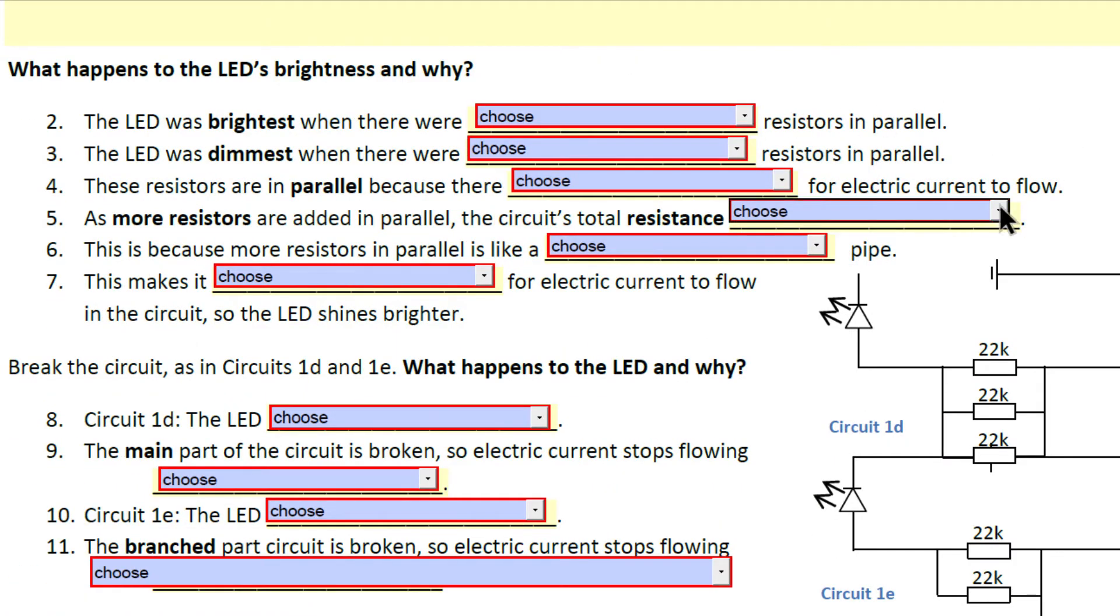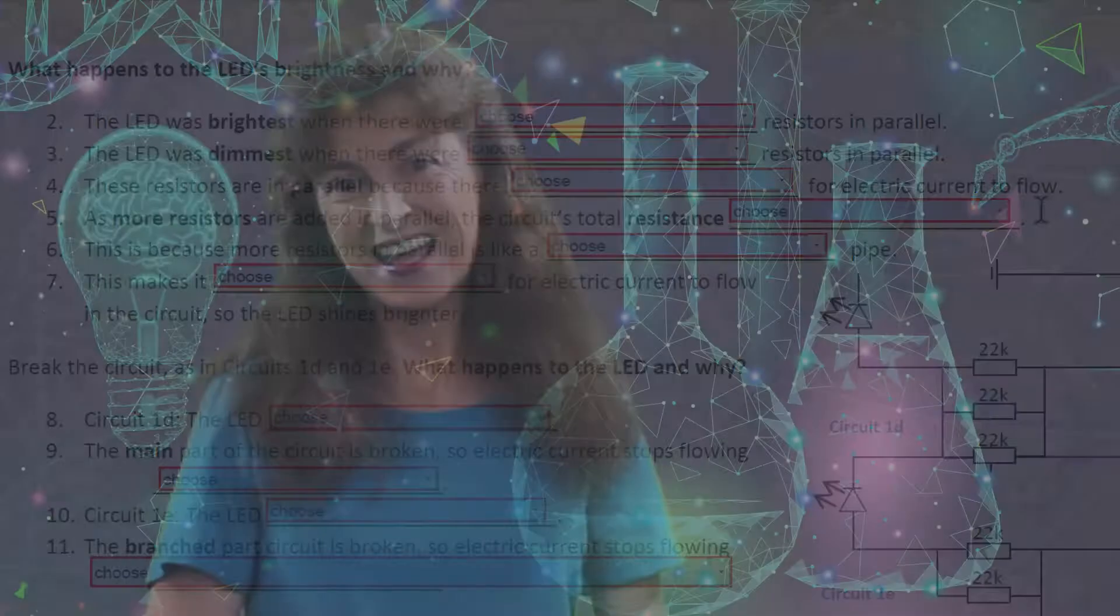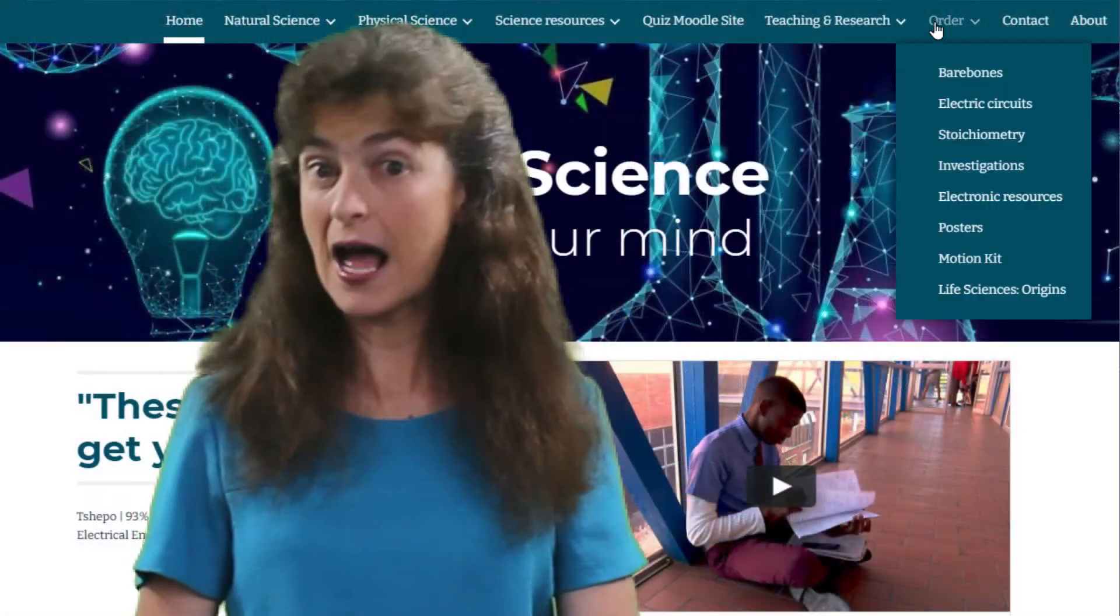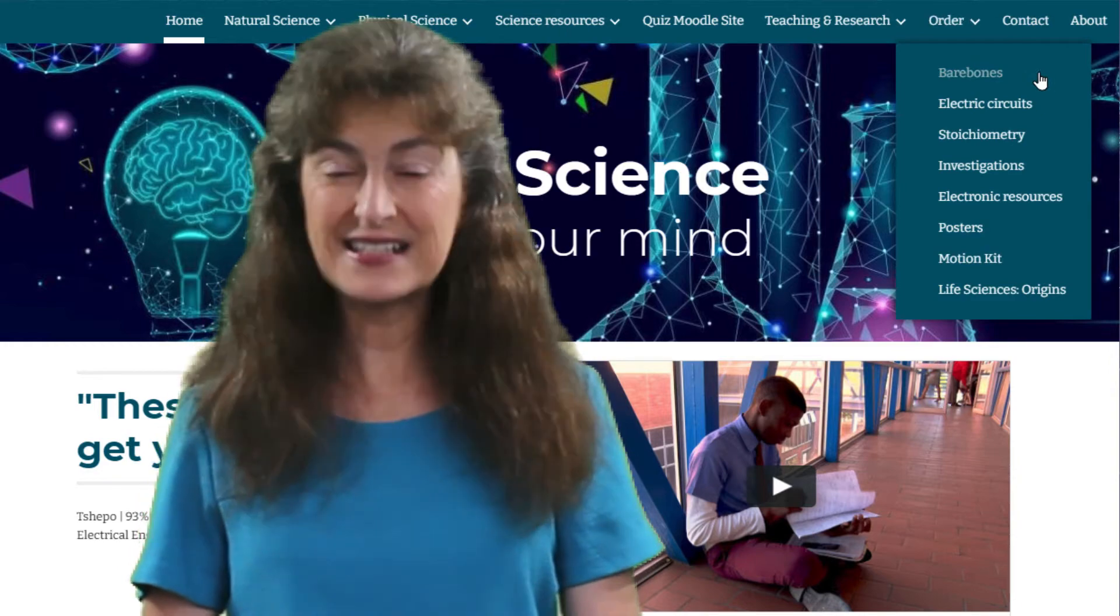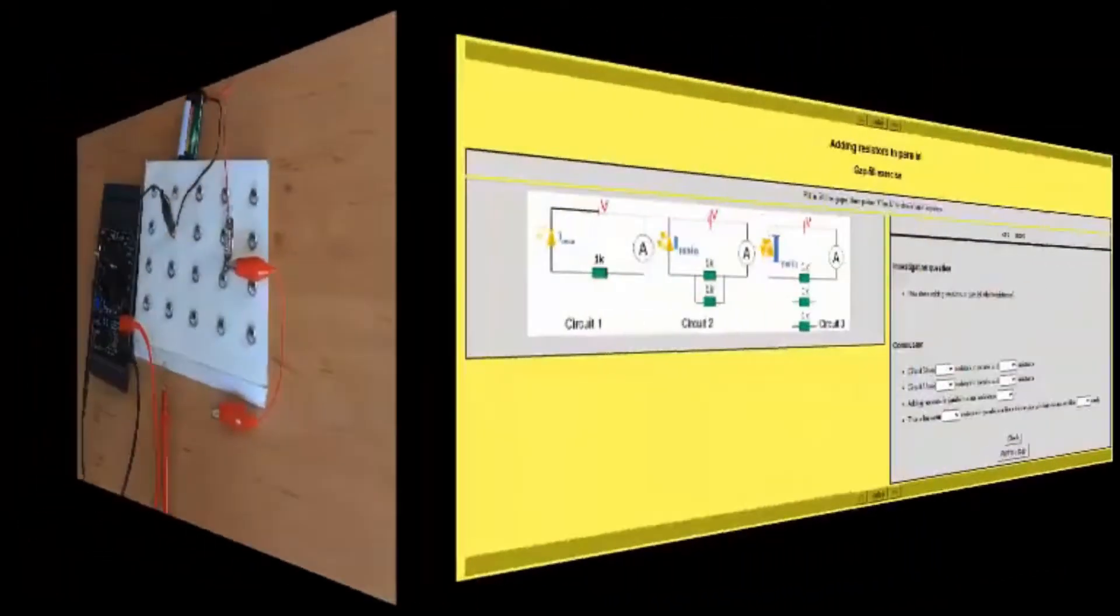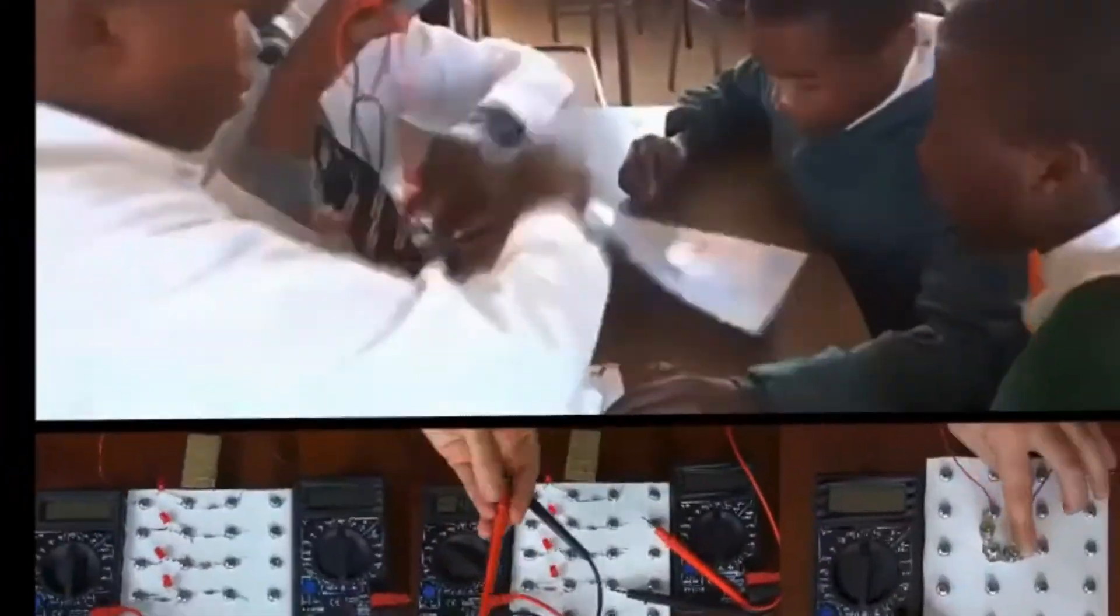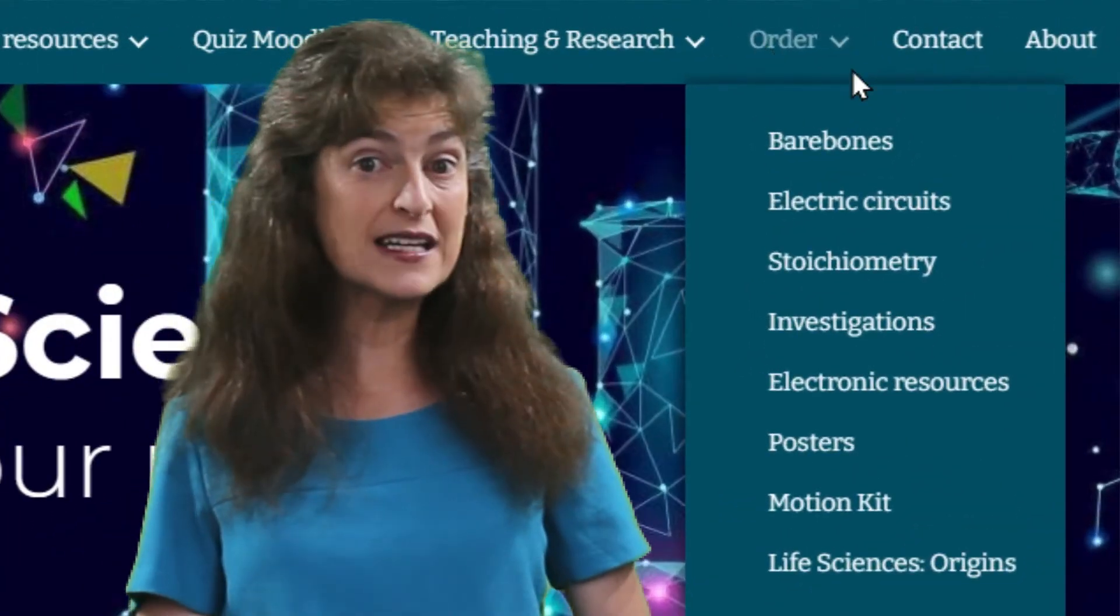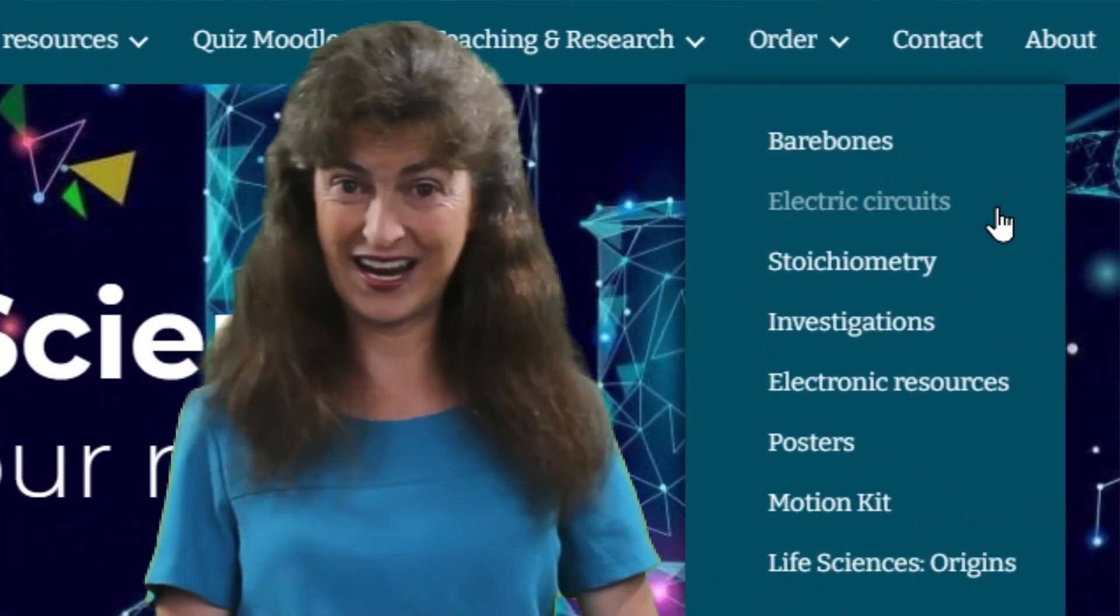The books are also very affordable. Click the link below to navigate to the order tab on the learnscience.co.za website for a price list and order forms. The bare bones books are part of an interconnected set of resources. There are posters, movies, and quizzes which match these books, and for the energy and change books, there's a circuit building kit too. Explore the orders, bare bones, electric circuits, electronic resources, and posters tabs for more information about each of these.